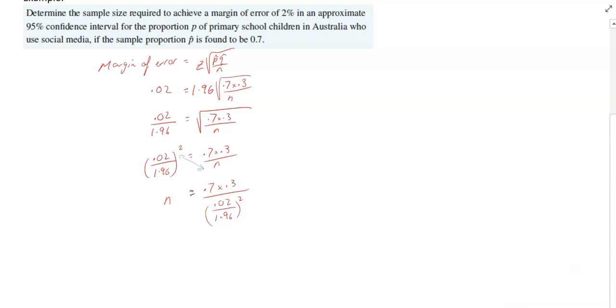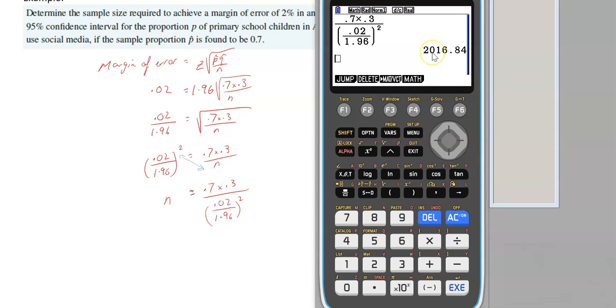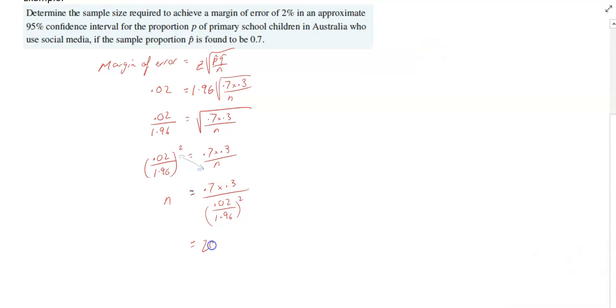All right, now you could have simplified this at any stage. I've just kept everything as it is and now I'm going to put it all into my calculator. Okay, and I have an answer of 2016.84. So that's 2016.84. I'll round that up to 2017.